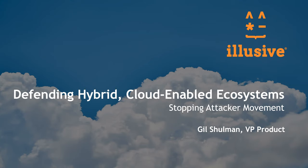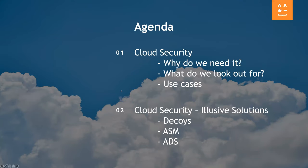Thank you, and I think it's good morning on your side of the world. My name is Gil Schulman, I'm VP of Product at Elusive. As part of this series of webinars, today we're going to talk about cloud-enabled ecosystems — problems that we see and solutions that we provide. From there we're going to move through different types of use cases, how we solve them, and everything that you probably need to know.